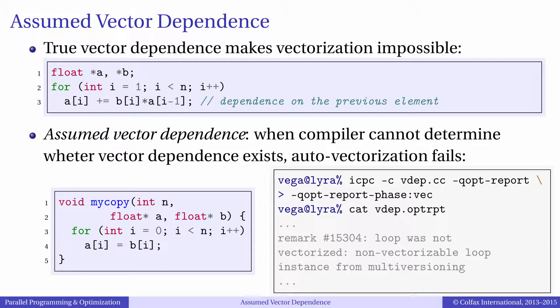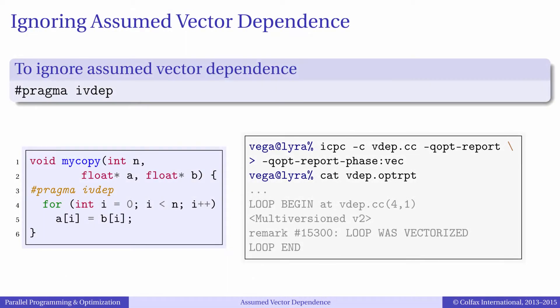Sometimes the compiler will refuse to vectorize loops because of assumed vector dependence, even though the logic of the application is such that there is no vector dependence at runtime. If we are certain that A and B will never be aliased at runtime, we can tell the compiler about it. This can be done with the statement pragma ivdep, which we place before the loop — ivdep stands for ignore vector dependence. As we can see, in this case the compiler report shows that the loop is vectorized.